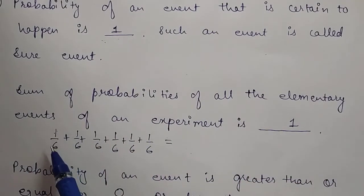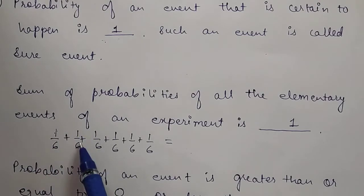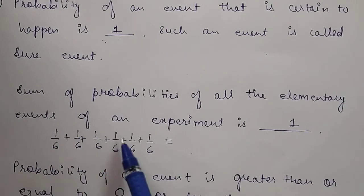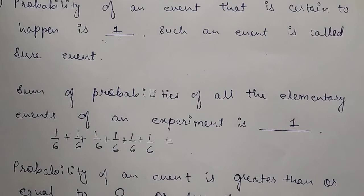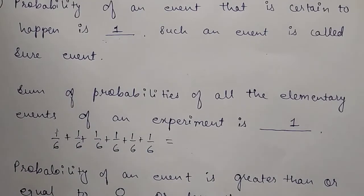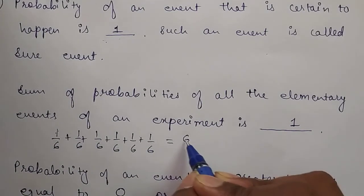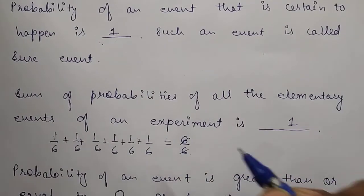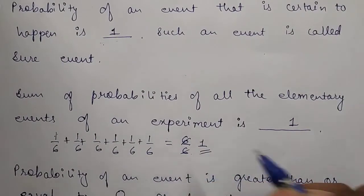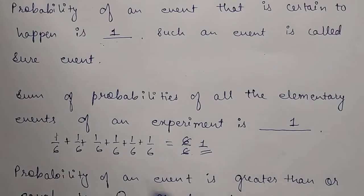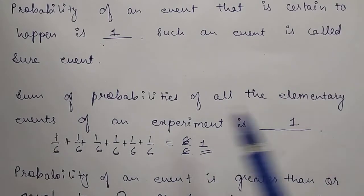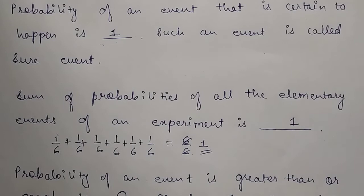For example, if I'm talking about 1, then 1 is one elementary event. If I'm talking about getting 2, then 2 is one elementary event. Similarly 3, 4, 5 - all are elementary events for throwing a dice. If I add all of them, the answer should be 6 upon 6, which is going to be 1. So always remember, the sum of probabilities of all the elementary events of an experiment is going to be 1.